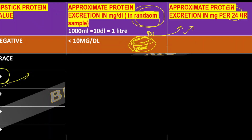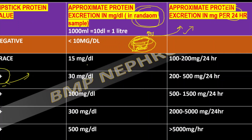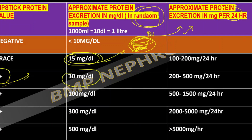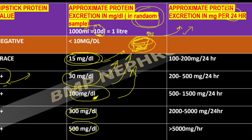For sample concentration: trace corresponds to approximately 15 mg/dL, 1+ is 30 mg/dL, 2+ is 100 mg/dL, 3+ is 300 mg/dL, and 4+ is 400 mg/dL — all per deciliter in that sample, not over 24 hours. Note that 1 deciliter equals 100 mL, and 10 deciliters equals 1 liter or 1000 mL.